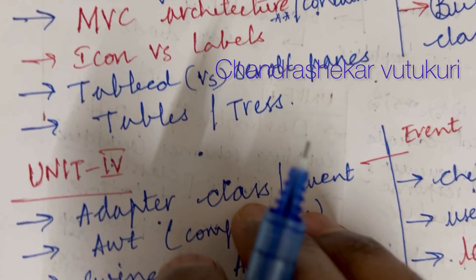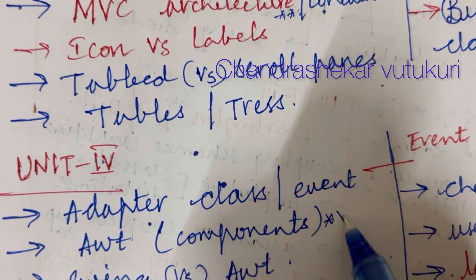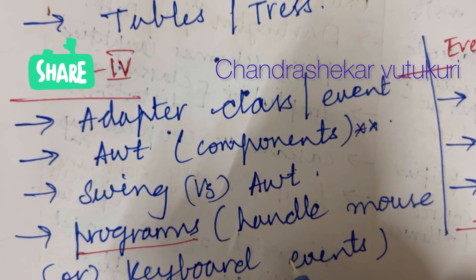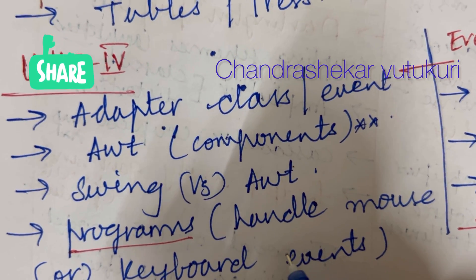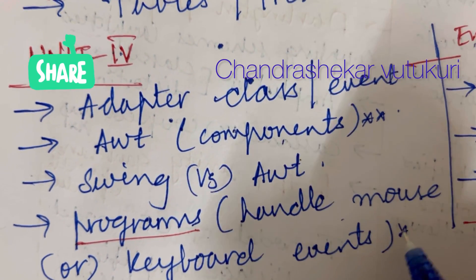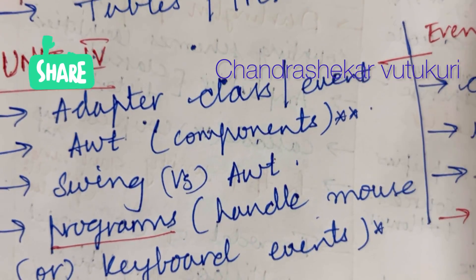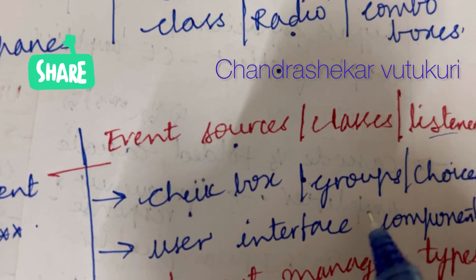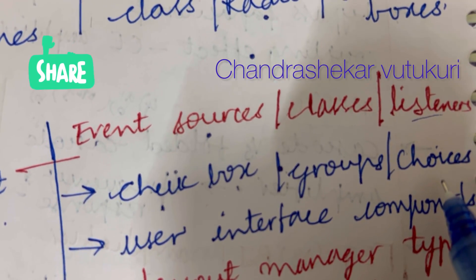Coming to unit 4, it is all about adapter classes. Event handling and AWT components is set to be the topmost question. Swing versus AWT, and the programs are very important from the 4th unit related to handling mouse and keyboard events. Handling mouse events and keyboard events is set to be the topmost question this time, which may occur in the question paper. Event sources, classes and listeners, and checkboxes, groups, and choices — all may occur in short as well as long questions.